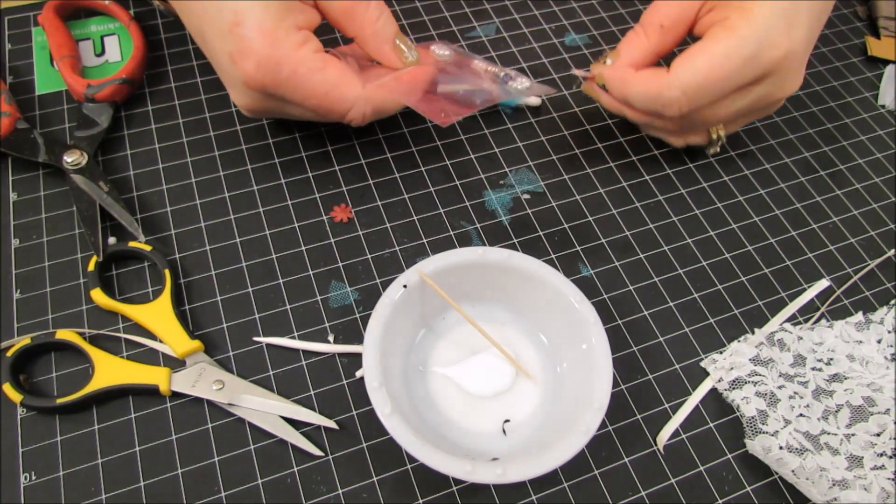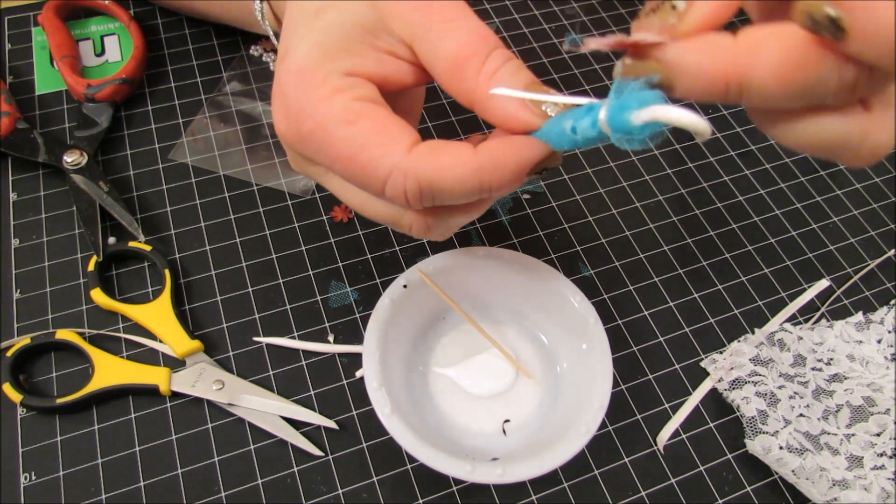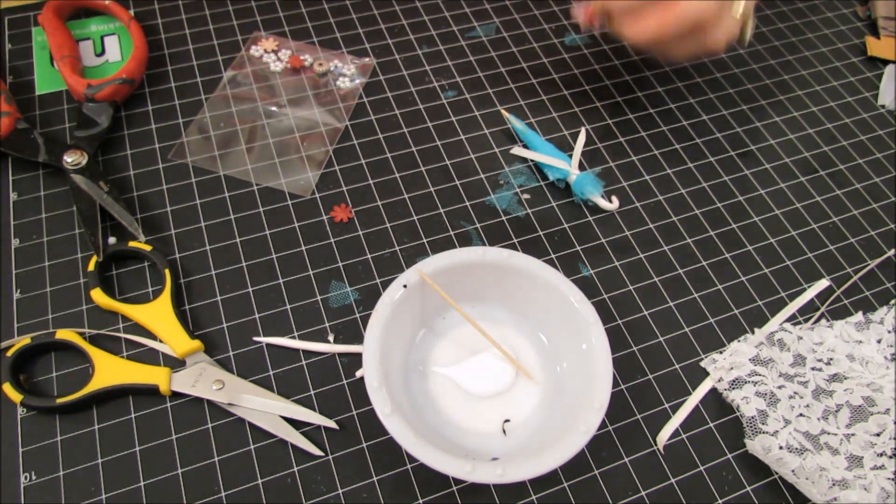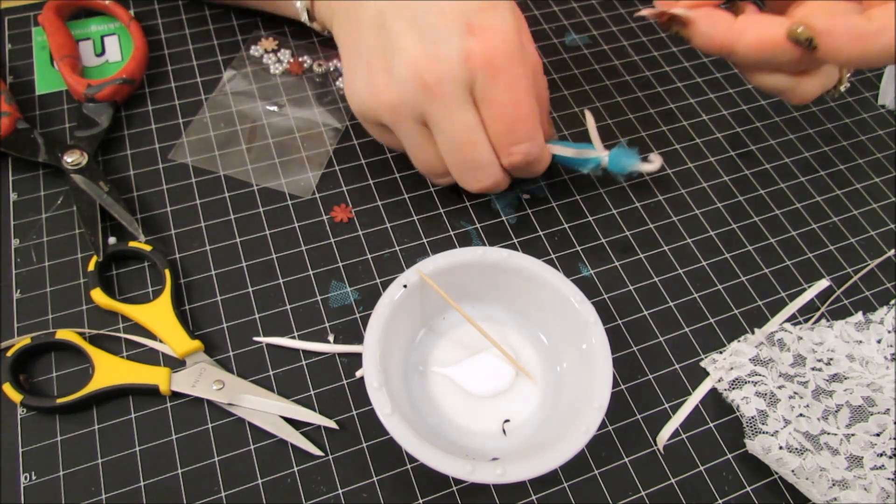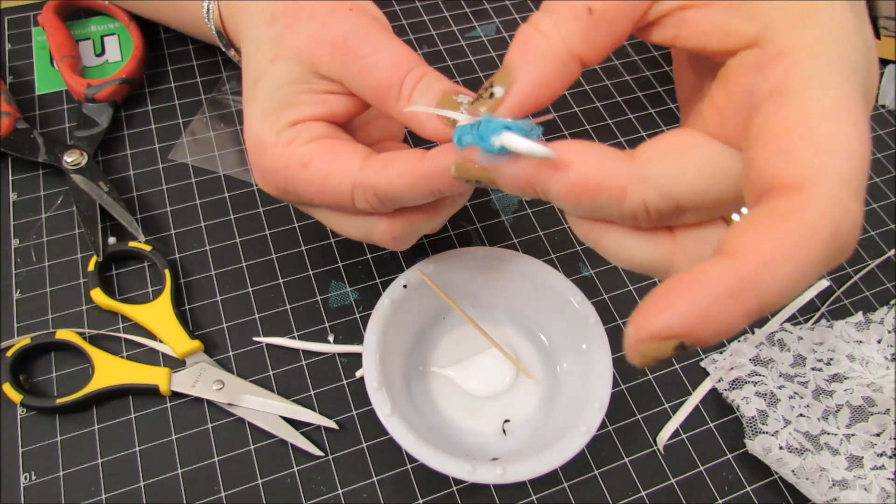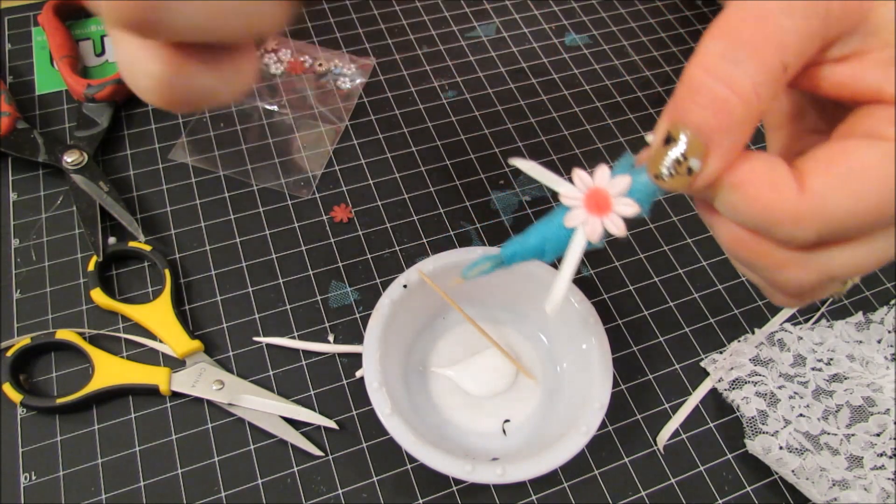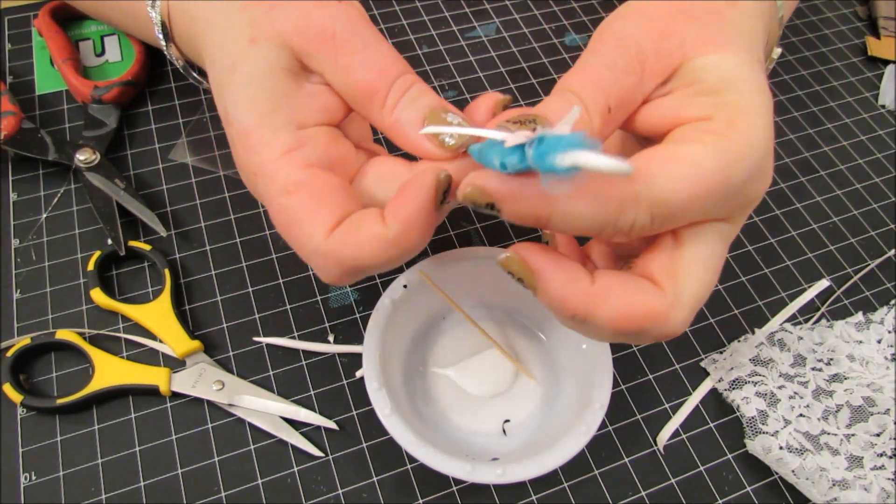You could glue that on there. For this one, I'm going to do this flower. Just so you could see it better. And, if you don't want to work with hot glue, you can do this with tacky glue. It just takes longer to dry. And, like I said, you just put it on with your toothpick and glue it on there. And, so we got that.